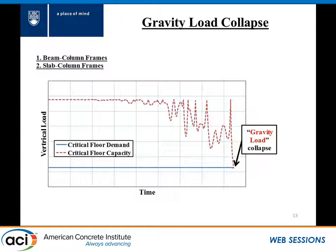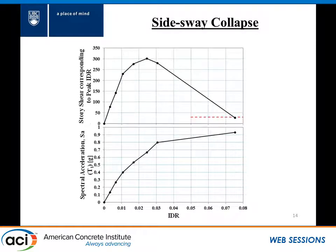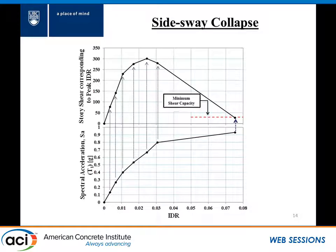At each time step in our model, we capture the capacity and demand on all floors. Whenever we reach the collapse state, we call that a gravity load collapse. In addition, we added side sway collapse in our numerical models. When we do an incremental dynamic analysis and amplify the spectral acceleration, each interstory drift has a lateral capacity at that floor. When you reach a point after degradation in your lateral response goes lower than the capacity at that level, that's when we call it a side sway collapse. Both gravity load collapse and side sway collapse were implemented in OpenSees.